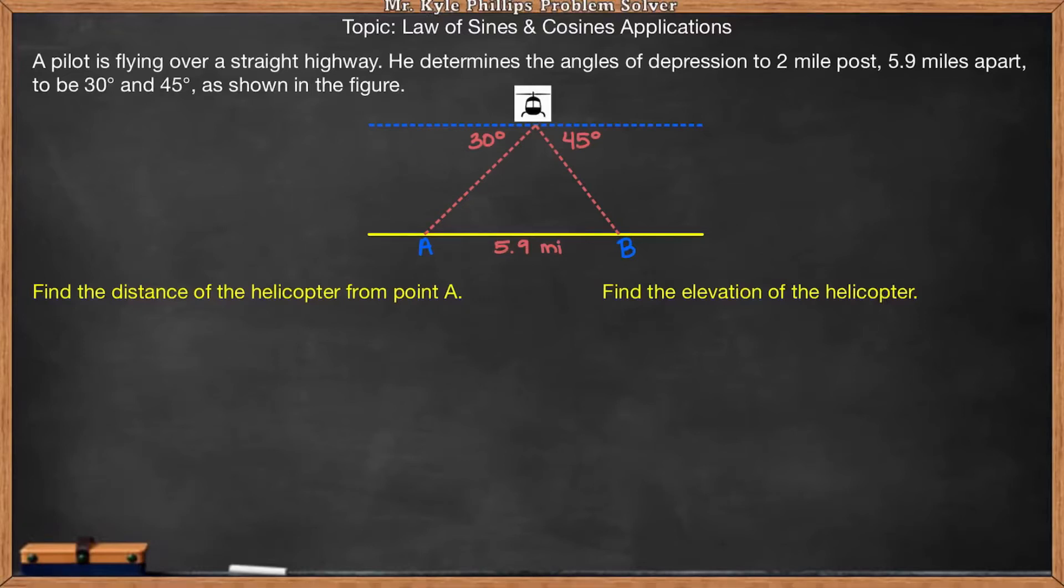Hey everybody. So in this problem, they tell us a pilot is flying over a straight highway. He determines the angles of depression to two mile posts, 5.9 miles apart, to be 30 degrees and 45 degrees as shown in the figure.